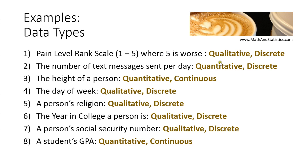We can also categorize these same examples as qualitative versus quantitative and discrete versus continuous. Pain ranking is qualitative and discrete — only values one through five are possible. Number of text messages is quantitative and discrete — you can't send 1.357 text messages. Height of a person is quantitative and continuous. Day of the week is qualitative and discrete. A person's religion is qualitative and discrete. Year in college is qualitative and discrete. Social security number is qualitative and discrete. GPA is quantitative and continuous.